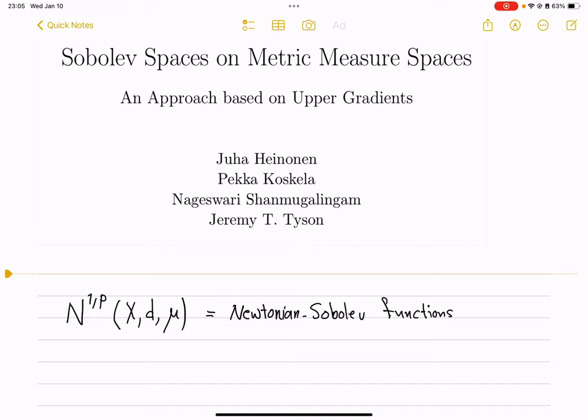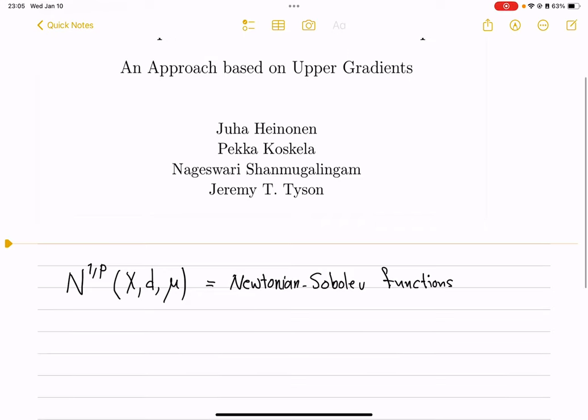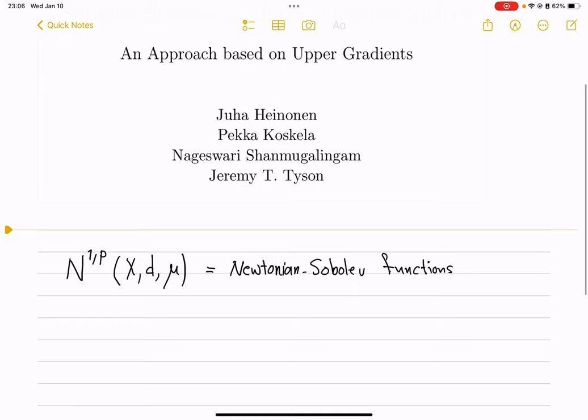So far we introduced the notion of upper gradients and used that to define Newtonian Sobolev functions on a metric measure space. Now, when anyone develops an abstract theory in very general settings, the first question is, what do we get if we apply that to very concrete examples?